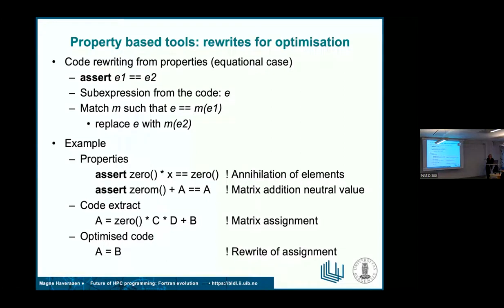I've been following this idea for some time, and the idea is to use automated tools to refactor your code on a case-by-case basis. So if these properties hold, do the refactoring. If they don't hold, do some other refactoring if you know about them.